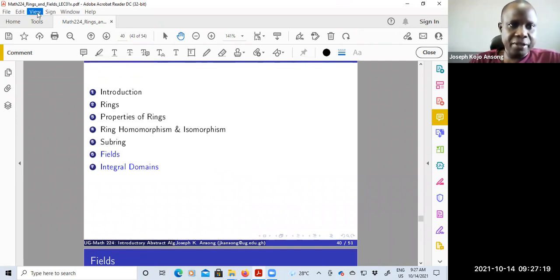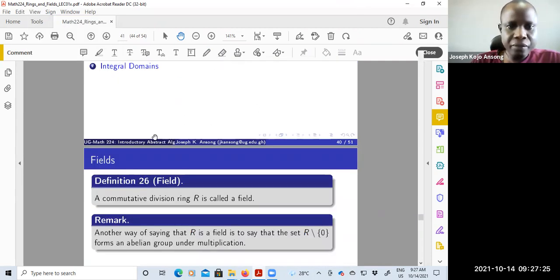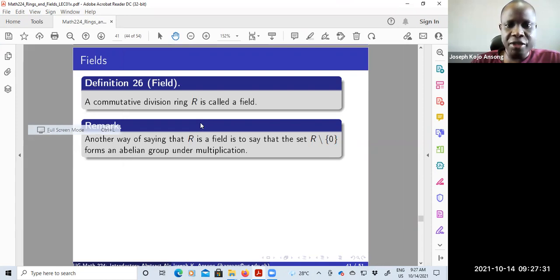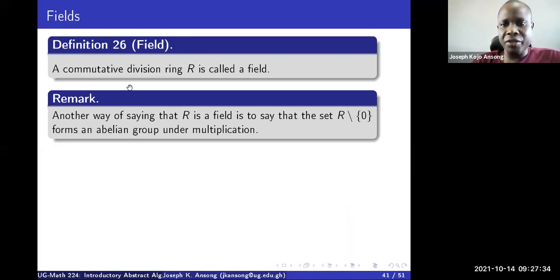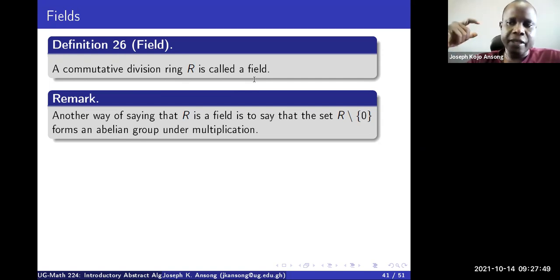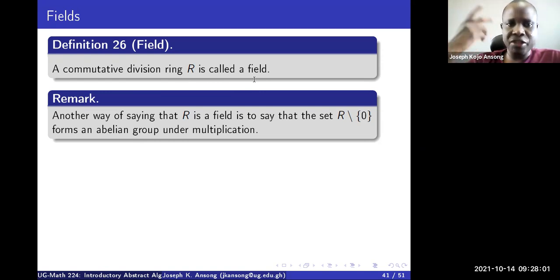So now we move to fields. What is a field? Well, if you know what a division ring is, then it's easy to define what a field is. A field is basically a division ring that is commutative. When we say commutative, we are referring to commutativity with regards to multiplication. So a commutative division ring is called a field — it's a division ring that is commutative.